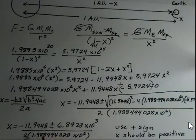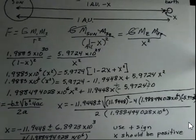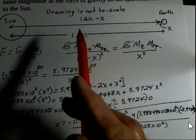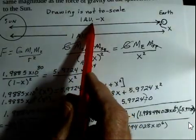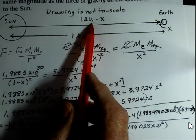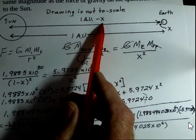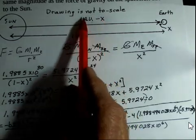Which sign should we use? Should we use the plus sign or the minus sign? Well, I'd call your attention back here to this calculation of the distance from the sun to the spacecraft. It's 1 minus x. If x is a positive number, then this is going to be smaller than 1 AU.